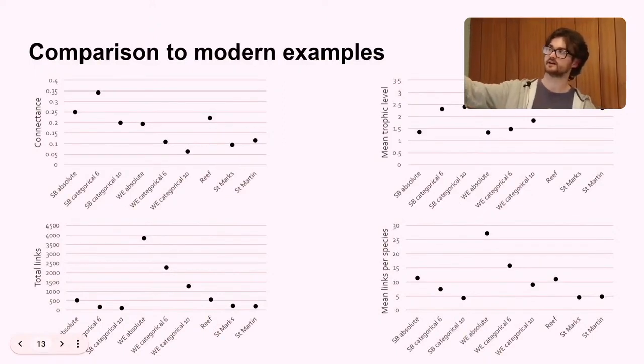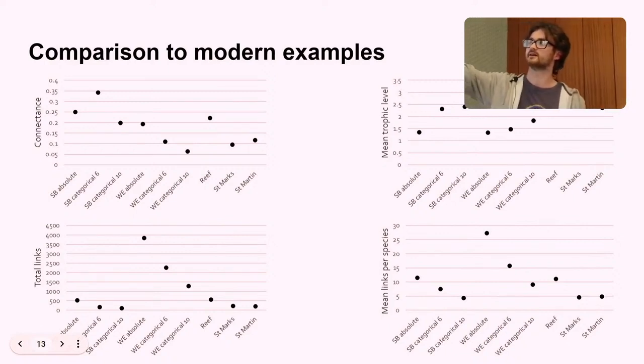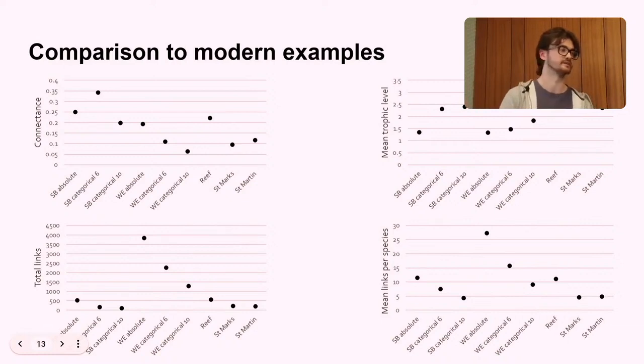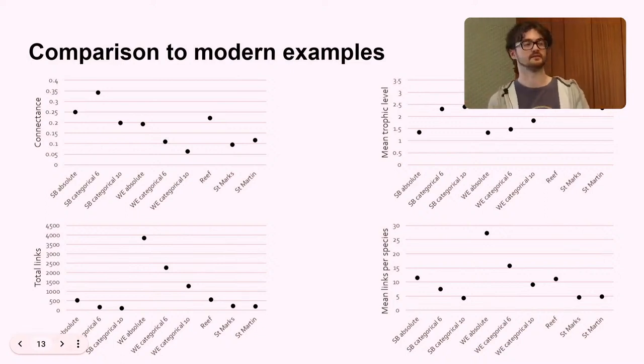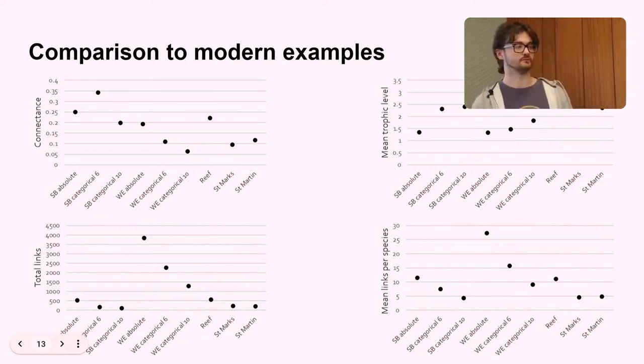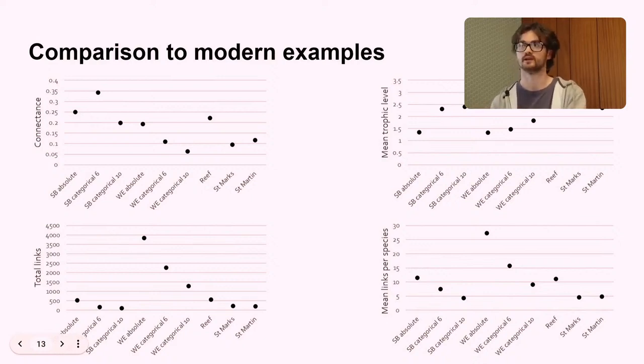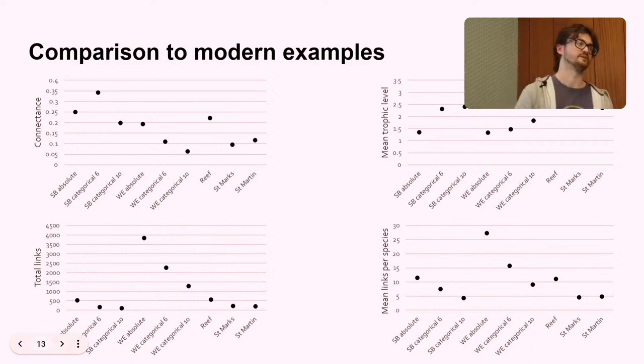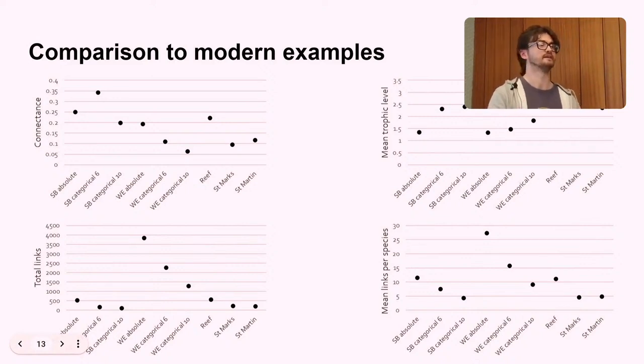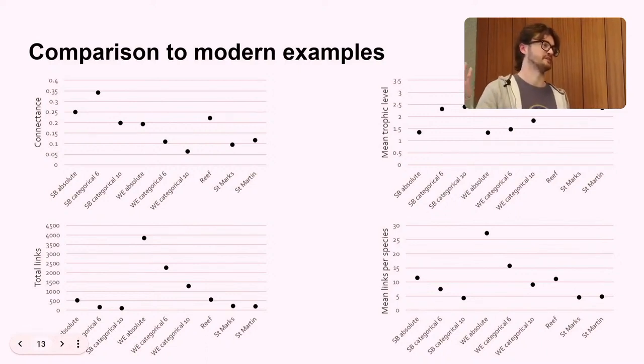Okay, so then I compared these webs to modern examples. So they're marked as a reef, St. Marks, and St. Martin. And these are just modern ecosystems from islands in the Pacific. So the four metrics that I focused on were connectance, mean trophic level, total links, and mean links per species. So connectance is the proportion of links that occur out of all the links that could possibly occur, regardless of the trait rules. And that's a measure of ecosystem complexity. So as ecosystems become more complex, and as species diversity increases, that number goes down. Because, say, if you had an ecosystem with five organisms, they're all going to really be interacting with each other. Or many of the links that could occur will occur. Whereas in the Amazon, where there's thousands of animals, many of those links that could occur will never occur.